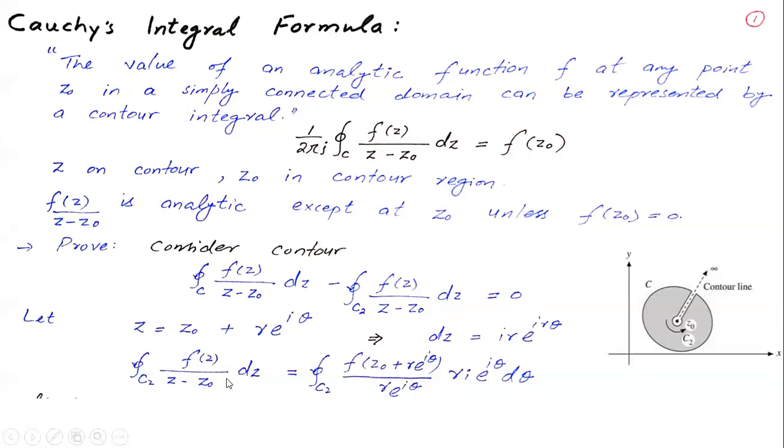The integral becomes f(z0 + r*e^(iθ)) over (z - z0), where z - z0 equals r*e^(iθ). The terms e^(iθ) and r cancel out.